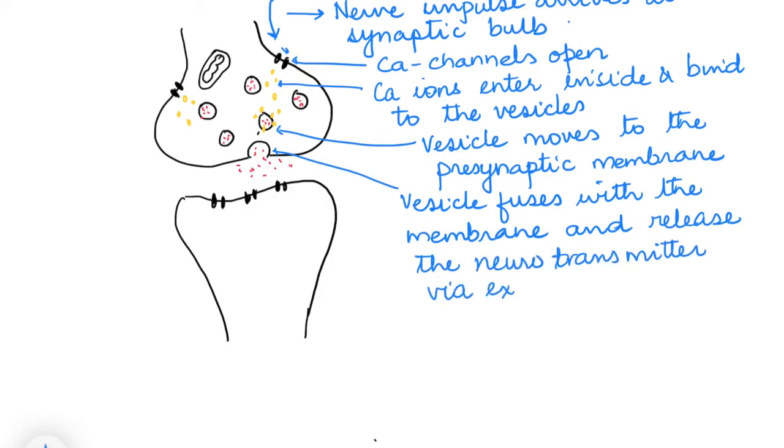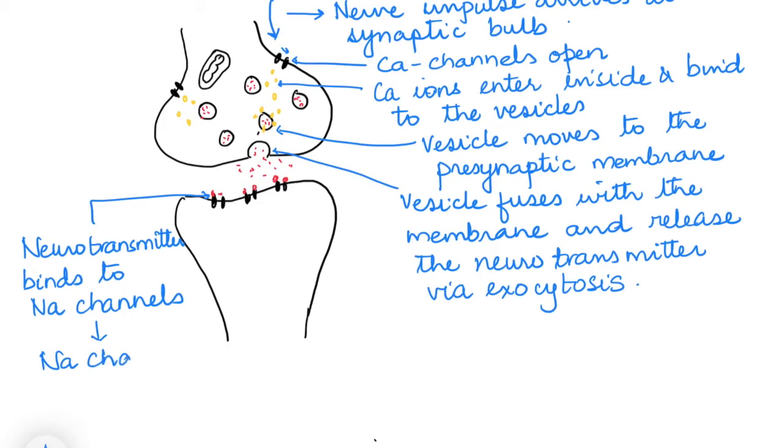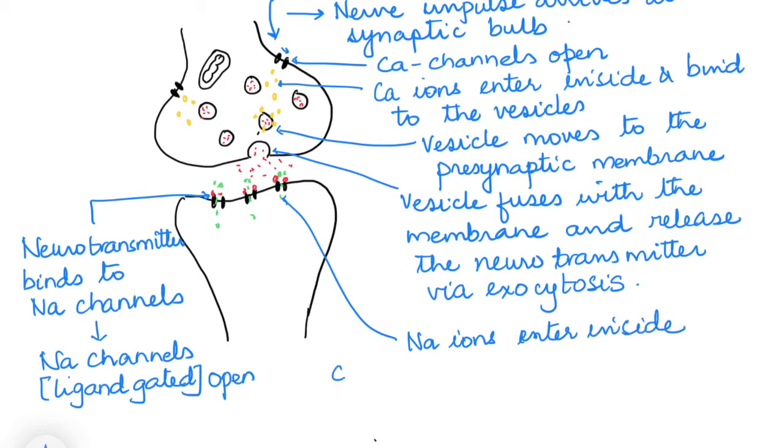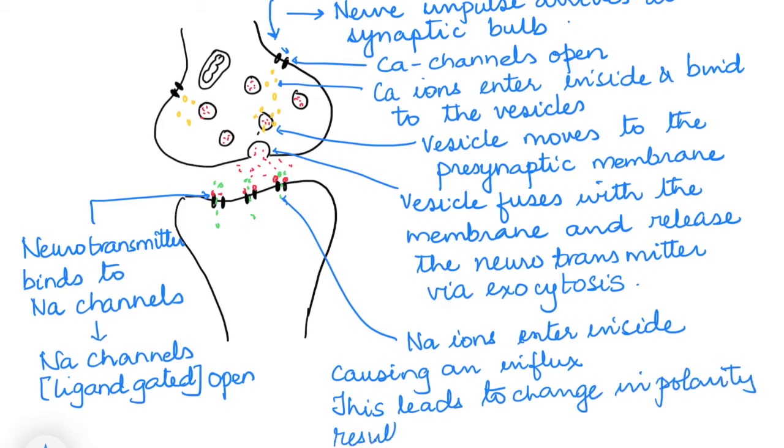So it releases these neurotransmitters into the synaptic cleft or the synaptic gap. These neurotransmitters now go and bind to the sodium channels that are present on the post-synaptic membrane, which lead the sodium channels to open. Now these are ligand-gated sodium channels and not voltage-gated. As soon as sodium channels open, the sodium ions enter inside causing an influx which leads to change in polarity in the neuron, and thus the impulse has now passed to the next neuron.